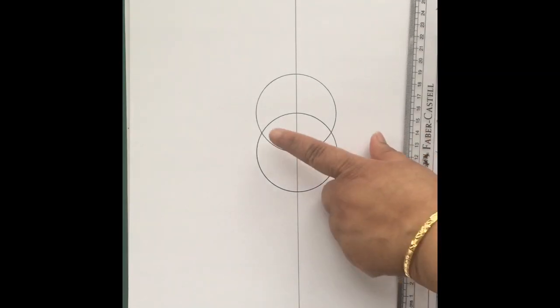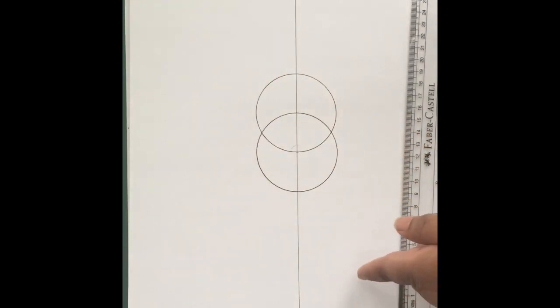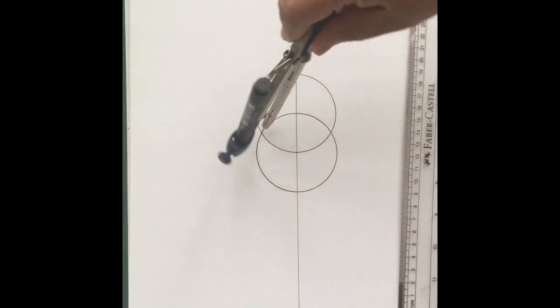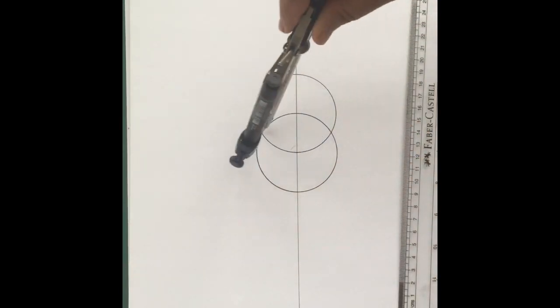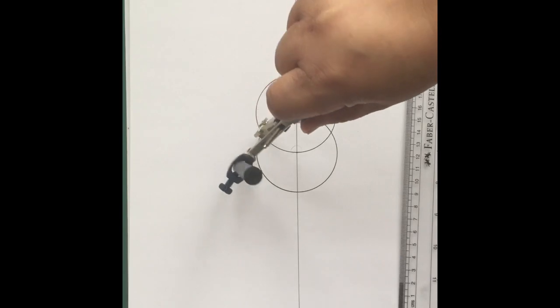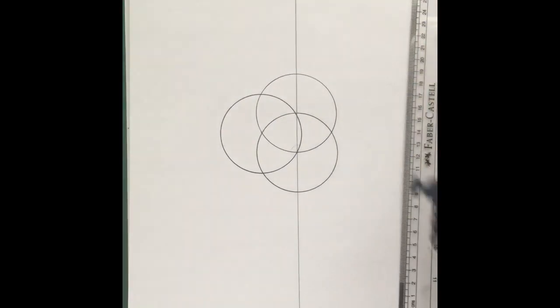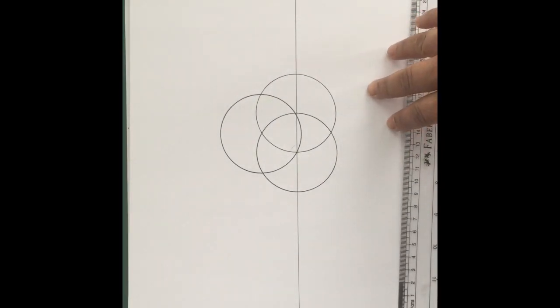Each new circle gives us new intersections, and that new intersection is where we're going to draw the third circle. As we draw the third circle, we find another shape: three petals in between three circles.